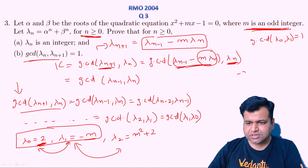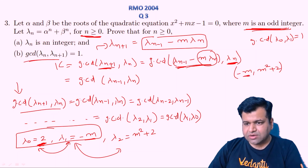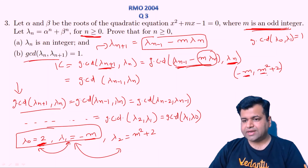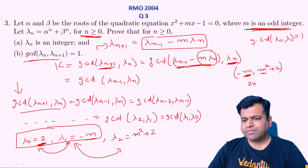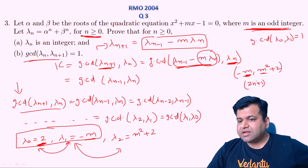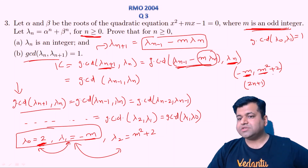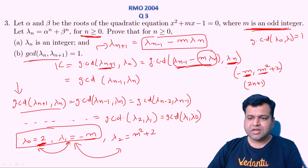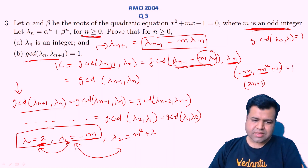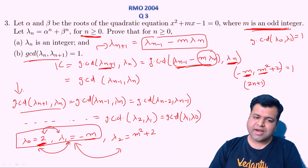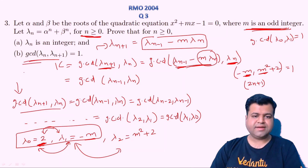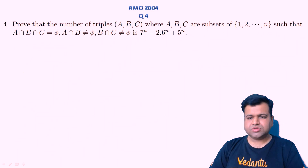You can also verify that gcd(-M, M² + 2) = 1. Since M is an odd number, M² + 2 is essentially a multiple of M plus 2. If M = 2k+1, then anything divisible by M will not be divisible by the extra +2 part. So the gcd of these two is also 1. Most clearly: gcd(λ₀, λ₁) = gcd(2, odd number) = 1 always. And hence gcd of all consecutive terms equals 1. That was question 3.